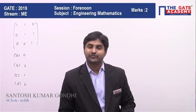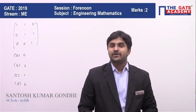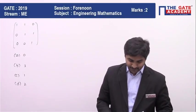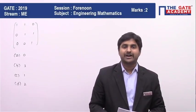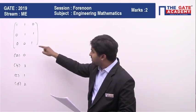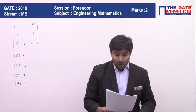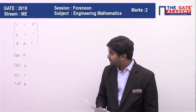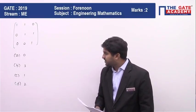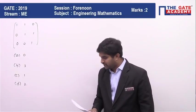In this video we will be seeing a question from engineering mathematics from the chapter linear algebra. First of all, let me read the question. For the matrix [1 0 0; 0 1 1; 0 0 1], how many distinct eigenvalues are there? Options are given: option A is 0, option B is 3, option C is 1, and option D is 2.